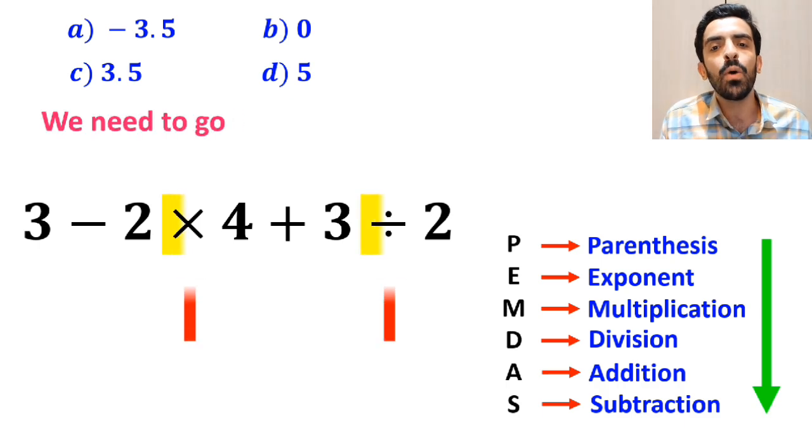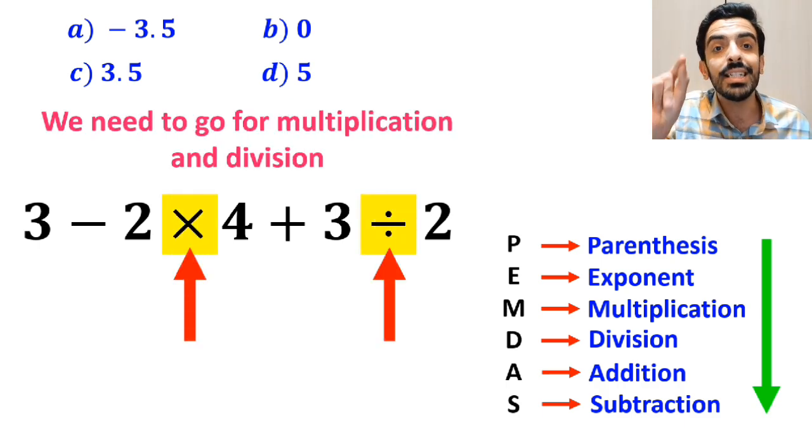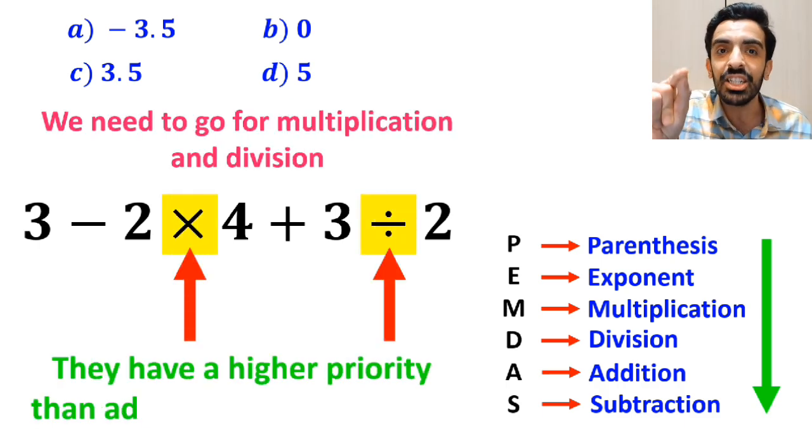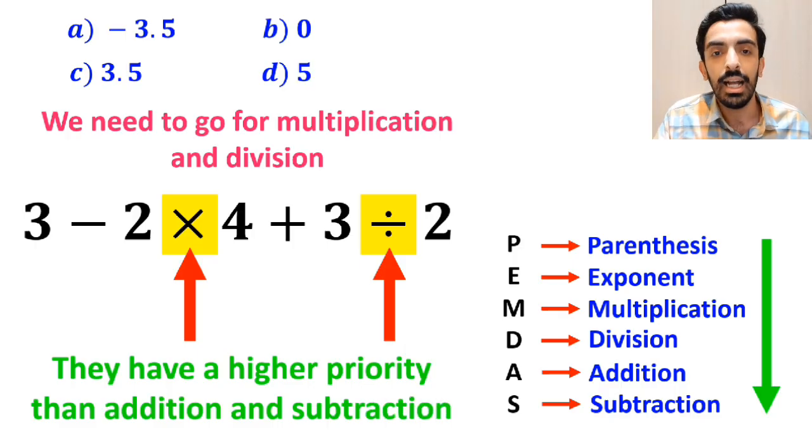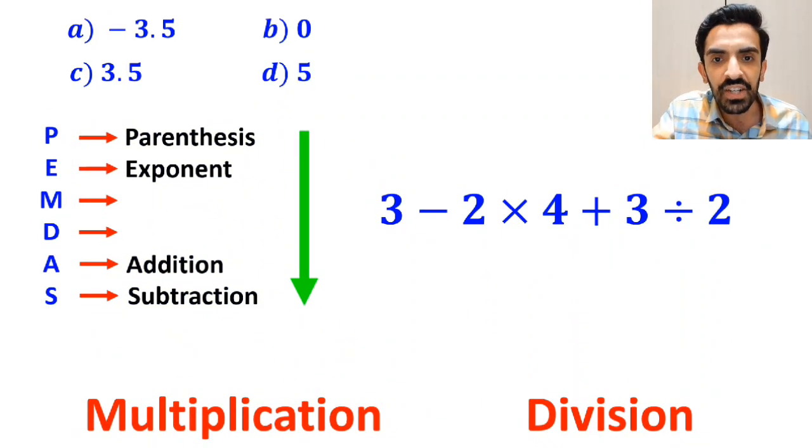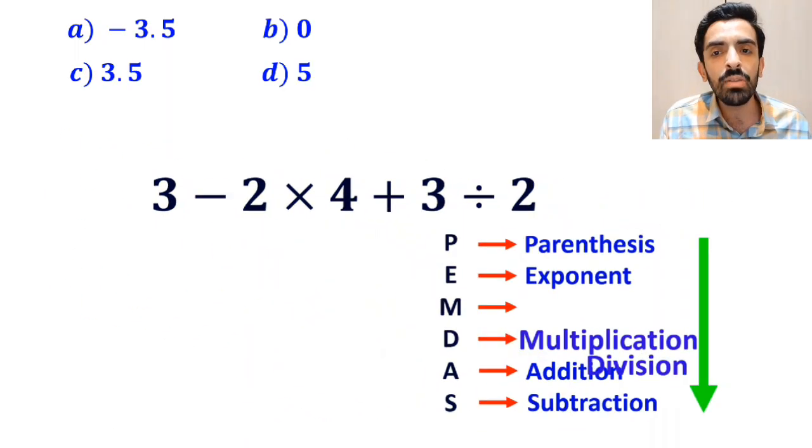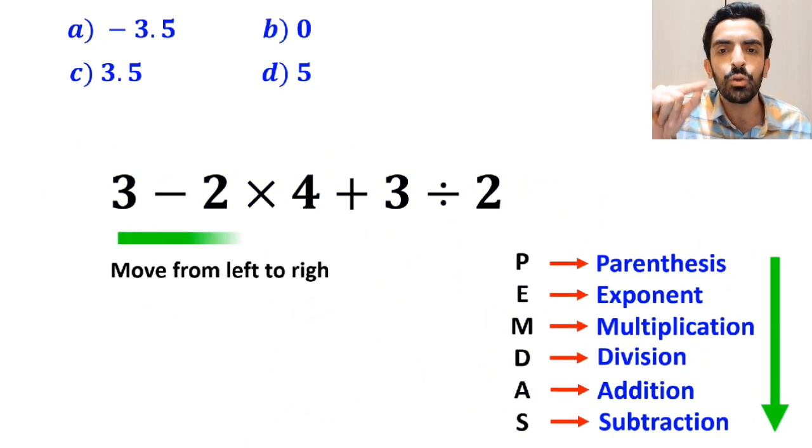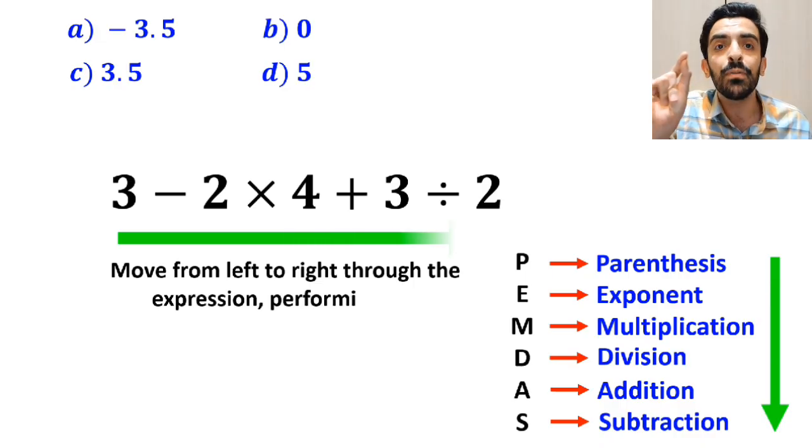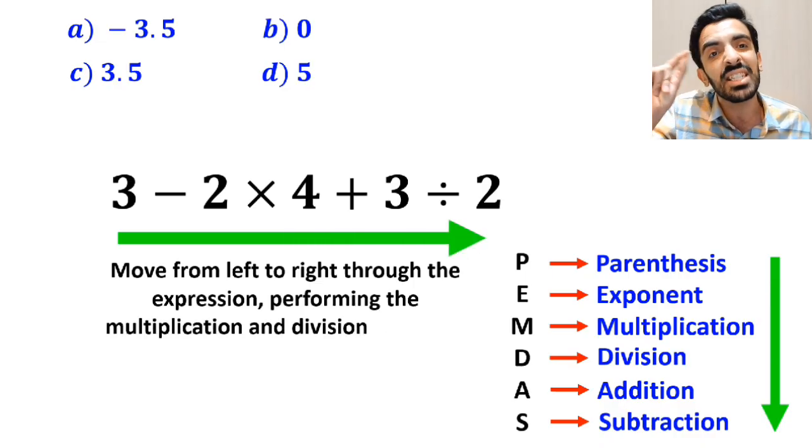In the next step, we need to go for multiplication and division, since they have a higher priority than addition and subtraction. However, it's very important to note that multiplication and division have the same level of priority. And all we need to do here is to move from left to right through the expression, performing the multiplication and division as we go.